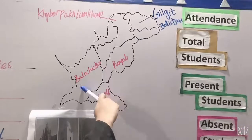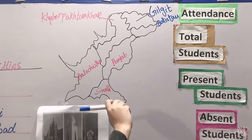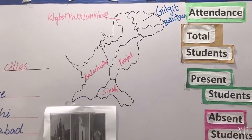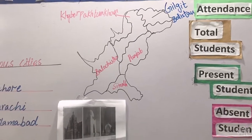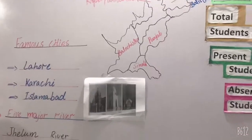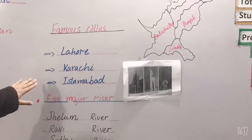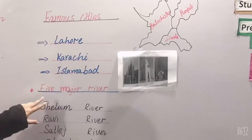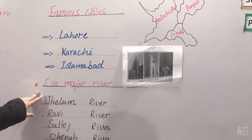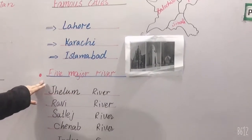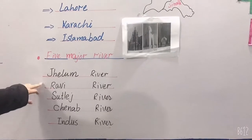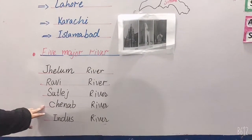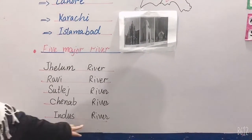और इसमें कितने provinces हैं — चार। खैबर पख्तुखा, बलोजिस्तान, पंजाब, सिंध — चार जो हमारे सूबे हैं। Famous cities — कौन सी है? लाहौर, कराची, इसलामाबाद। इसके बाद हैं five major rivers — झेलम, रावी, सतलुज, चनाब, इंडस रिवर।